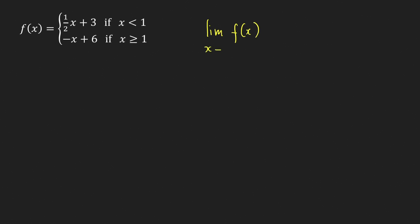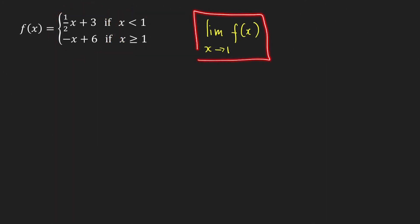If we look at this piecewise function, we have two different formulas defined on the left of 1 and on the right of 1. This tells us that we have to compute one-sided limits first. We cannot compute the two-sided limit directly because there is no single formula defined on both sides of 1.